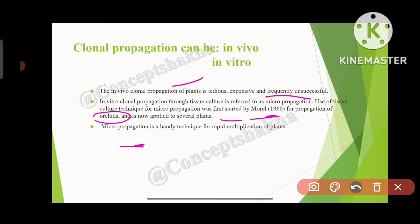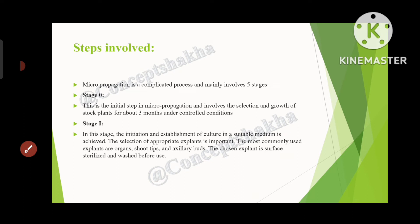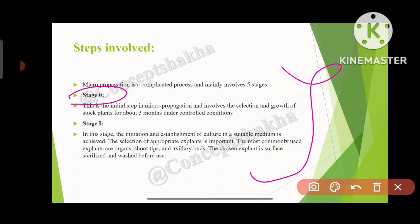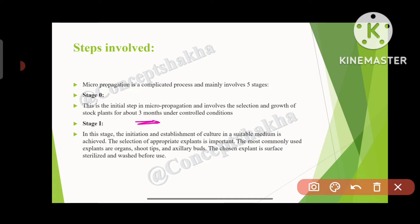Next are the steps involved in micropropagation — there are 5 stages. Stage 0 is the initial step and involves the selection and growth of the stock plant for about 3 months under controlled conditions. Stage 1 involves initiation and establishment of culture in a suitable medium. The selection of appropriate explants is important; the most commonly used explants are organs, shoot tip, and axillary buds. Explant is a small part or organ of the plant used to create a new plant, and it is surface sterilized and washed before use.